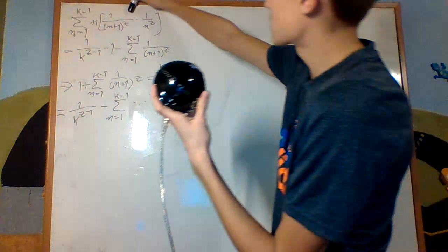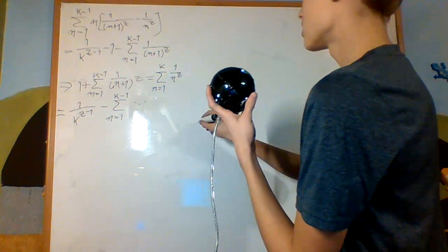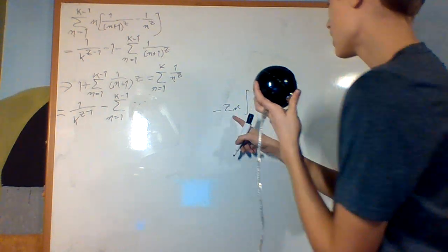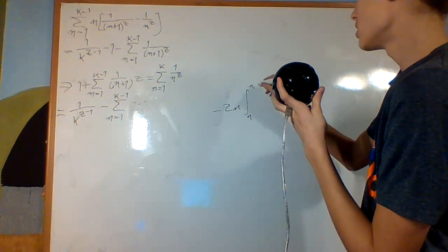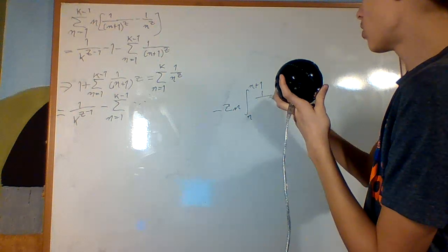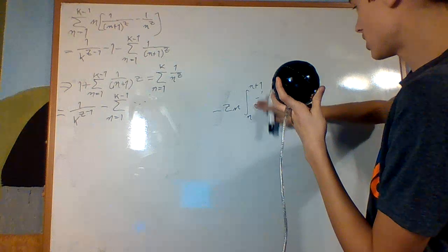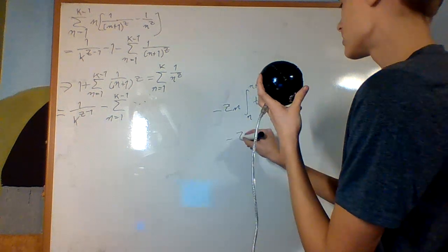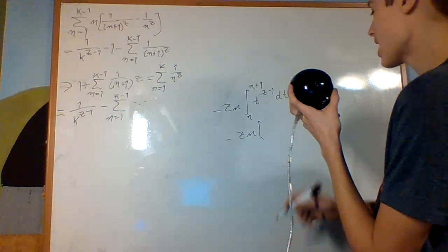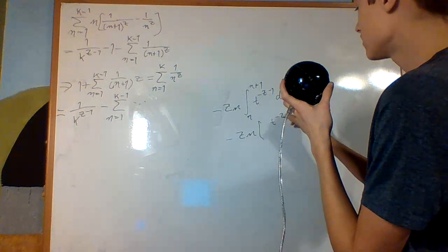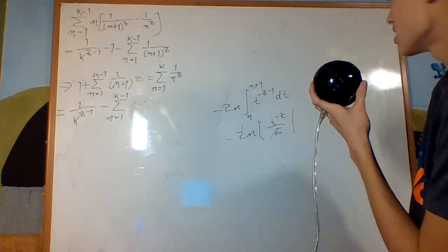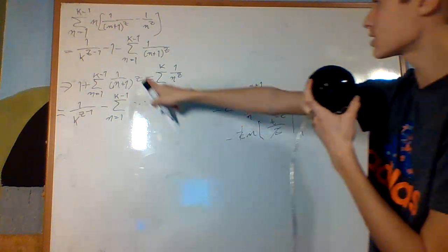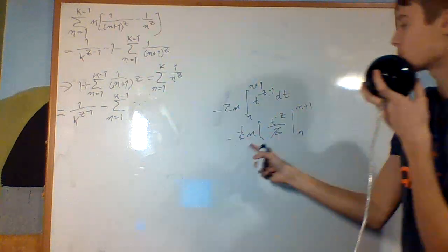What I'm going to do is replace what's in here, because that sure looks like an integral — namely it's the integral of negative z times n, times the integral from n to n+1 of t to the negative z minus 1, dt. Because if I evaluate this, that's negative z times n, then times t^(-z) over z — the z cancels — evaluate t from n to n+1, and you get that expression, multiplied by n.